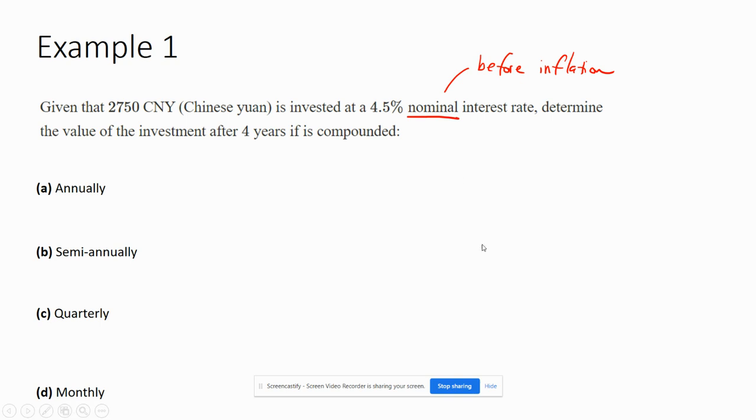and monthly. So these are the different levels of compounding. Annually means once per year. So that's the formula we went through in the first section. We just plug in the deposit, 2750, and then one plus the interest rate to the power of 4. And that's it.